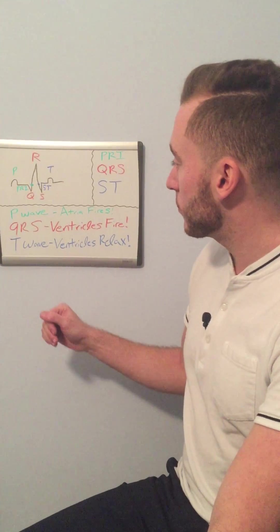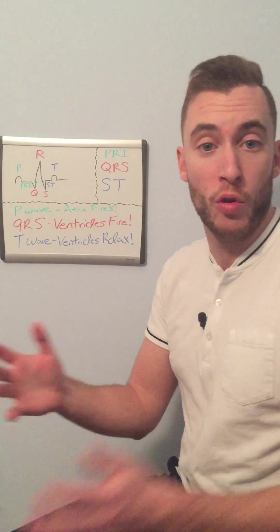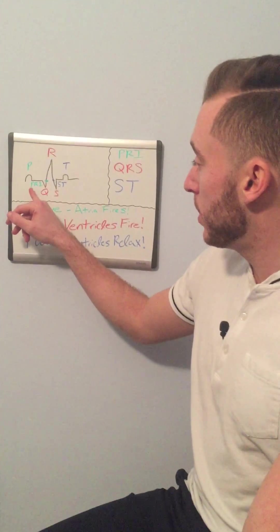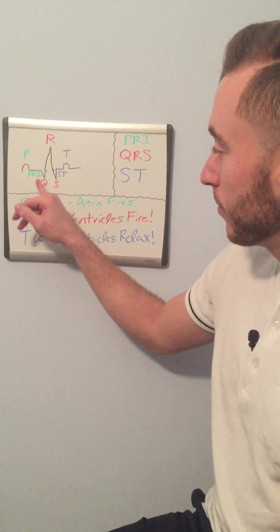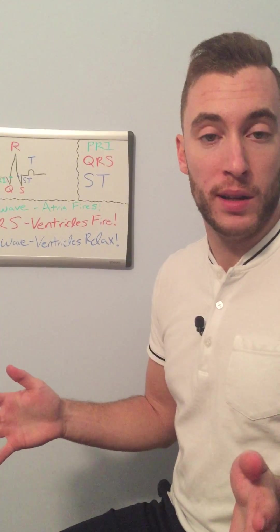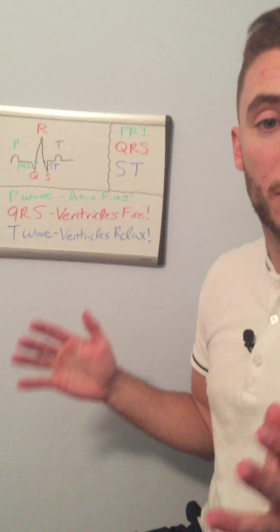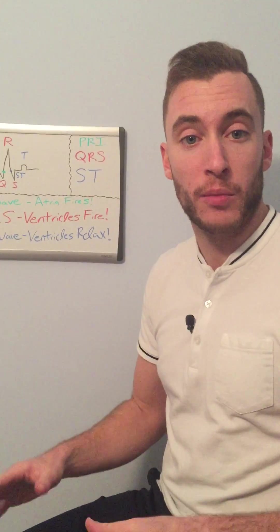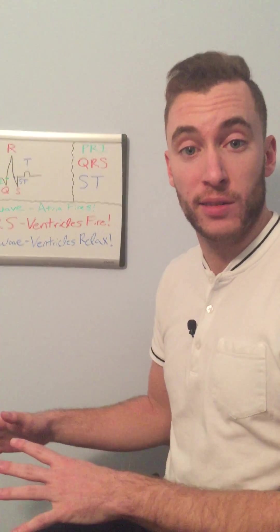Now that we know about all the waves, I want to talk about some other intervals and segments on the EKG that you'll have to know and recognize when they're normal and abnormal. Let's talk about the PRI — it stands for P, R, and I: the P wave, R wave, interval. An interval is the time in seconds between two things. The PRI is the interval between our P wave and the beginning of the R wave. In the next video, we're going to talk about seconds and times. Right now in this first lesson, we just want to know what we're looking at, what waves correspond to what letters, and what they do.